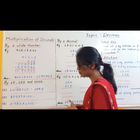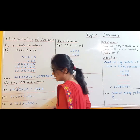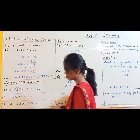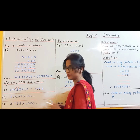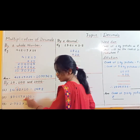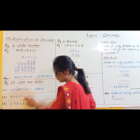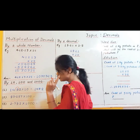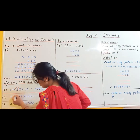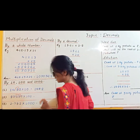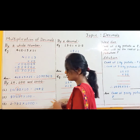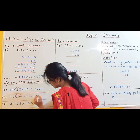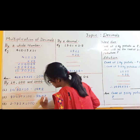Next example: the decimal 93.157 is multiplied by 100. Here there are two zeros. So the decimal will be shifted to the right-hand side by two places and the answer will be 9315.7.